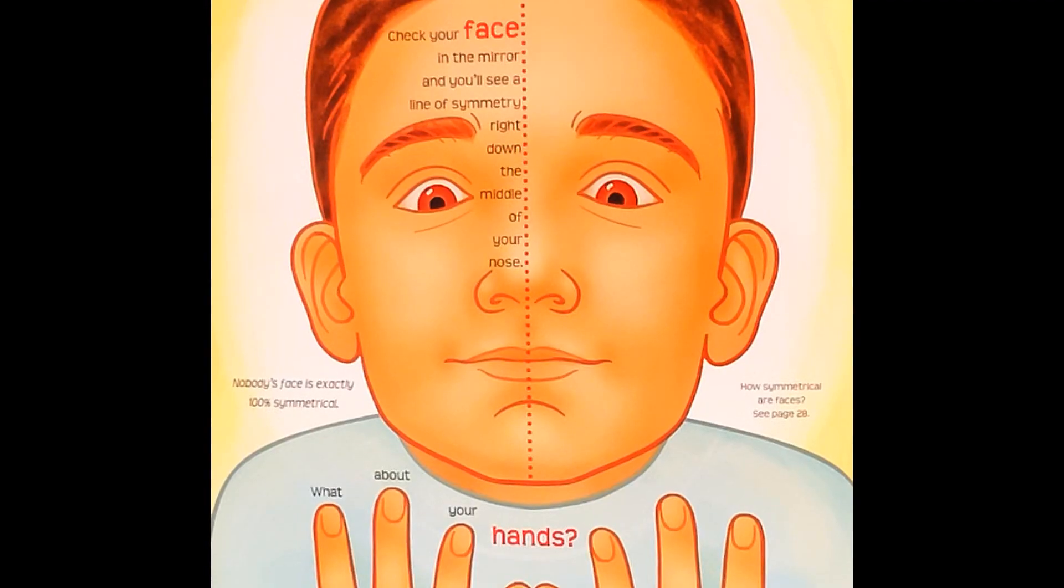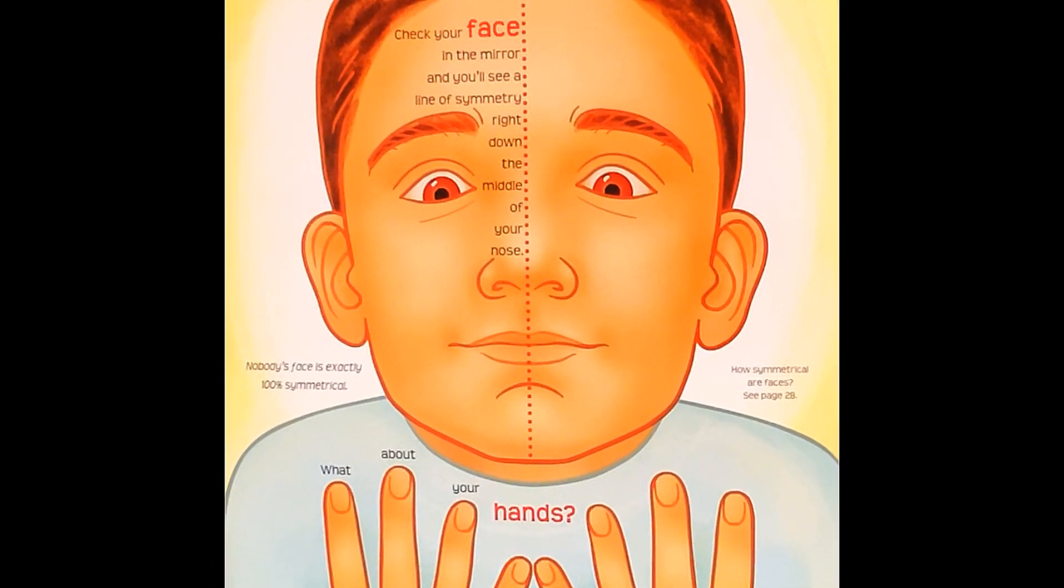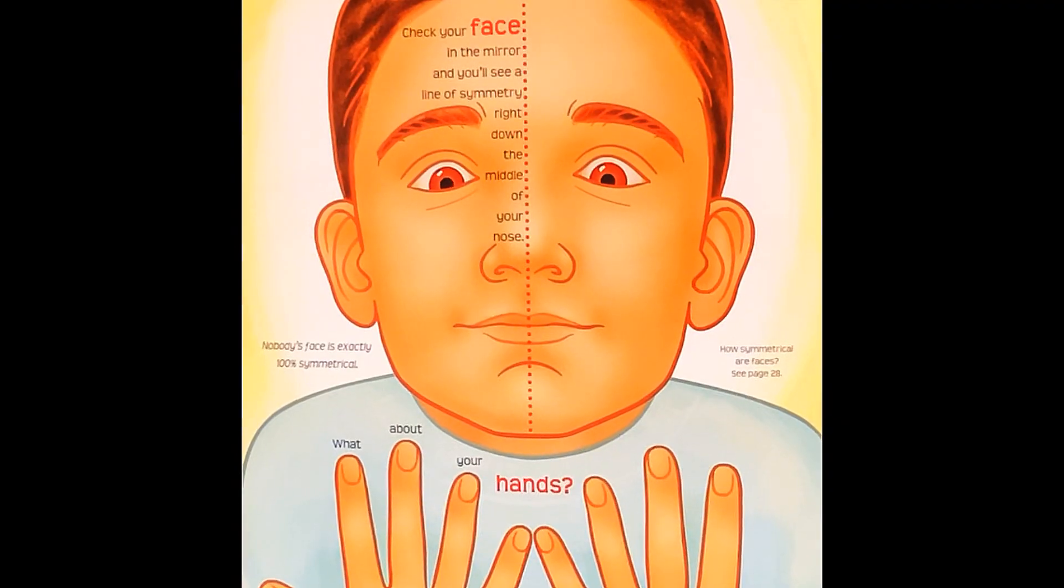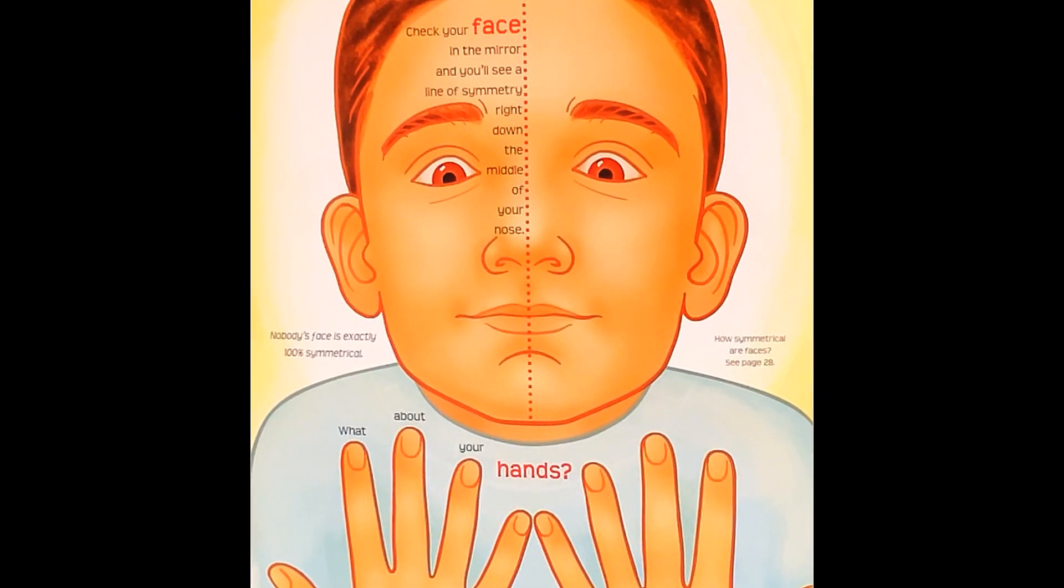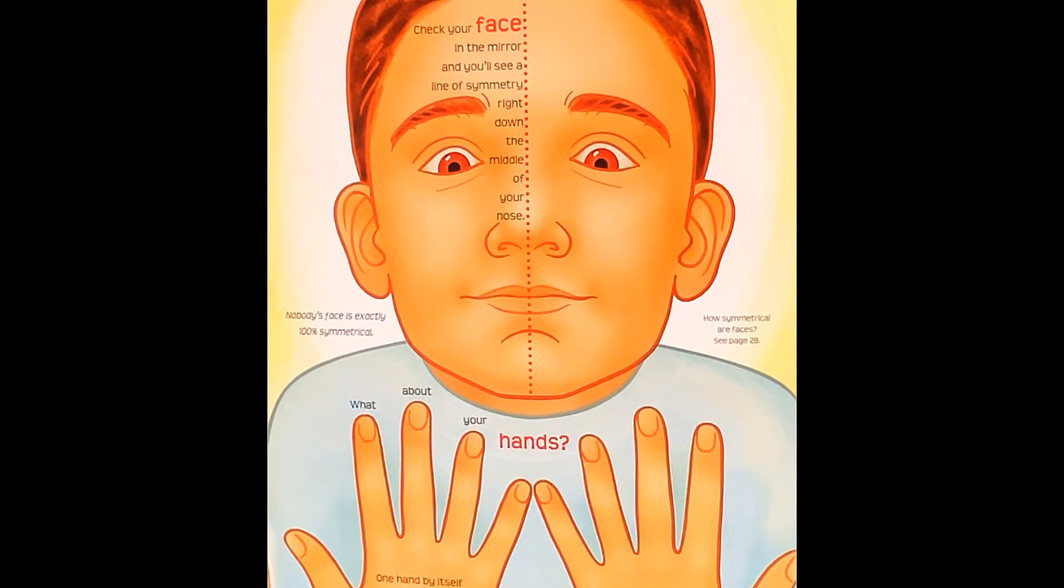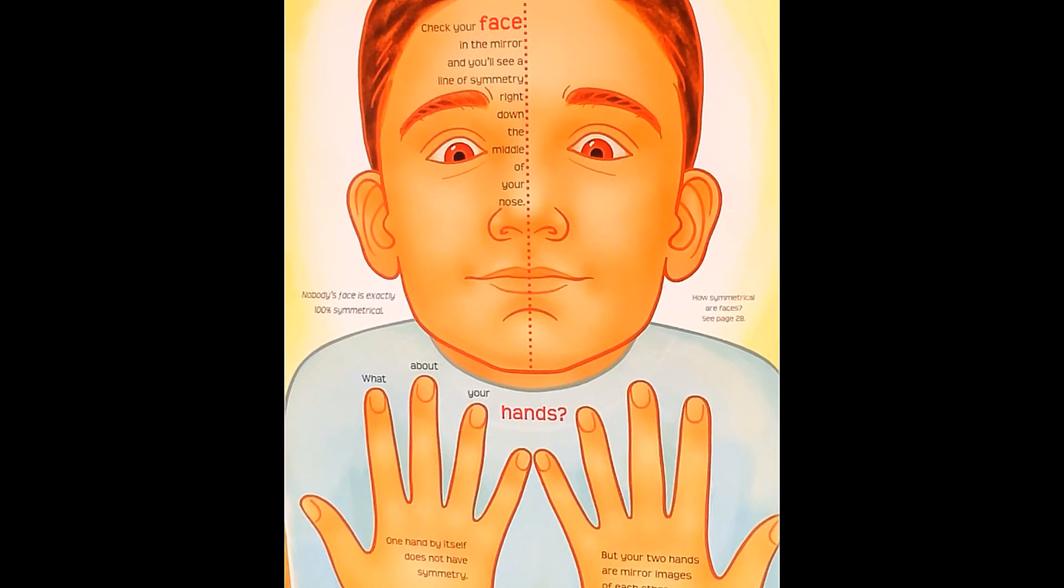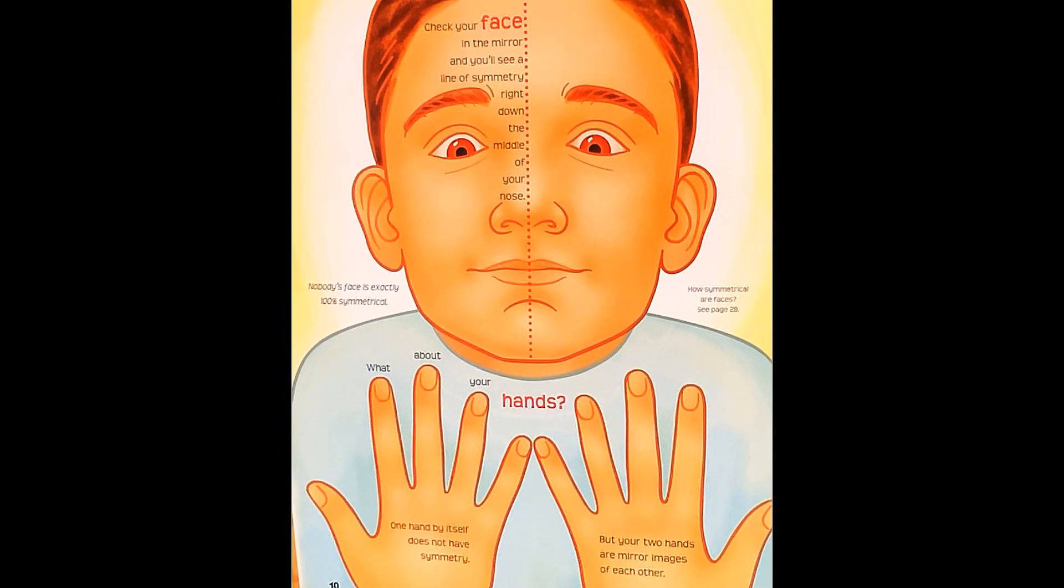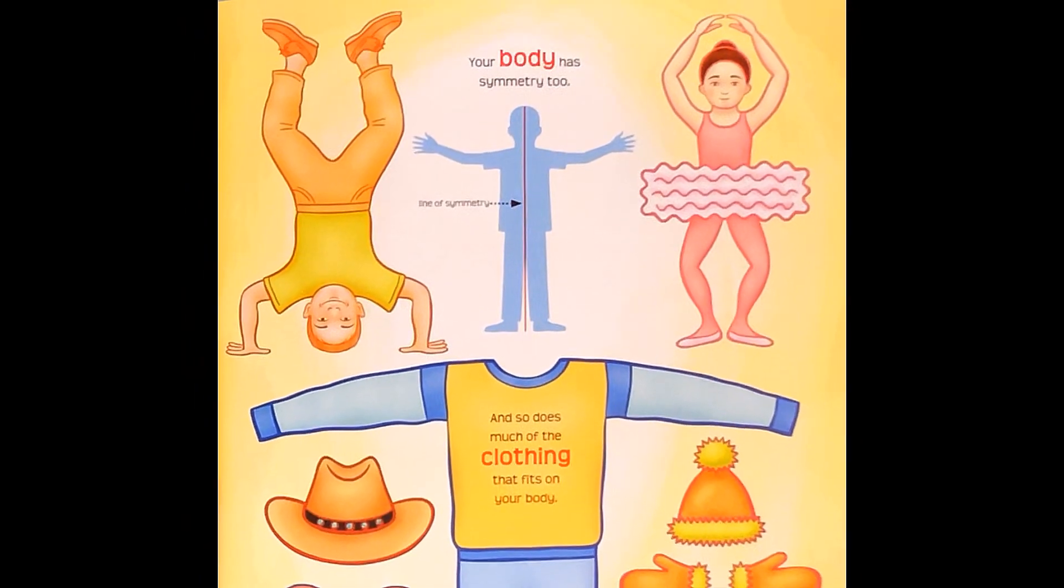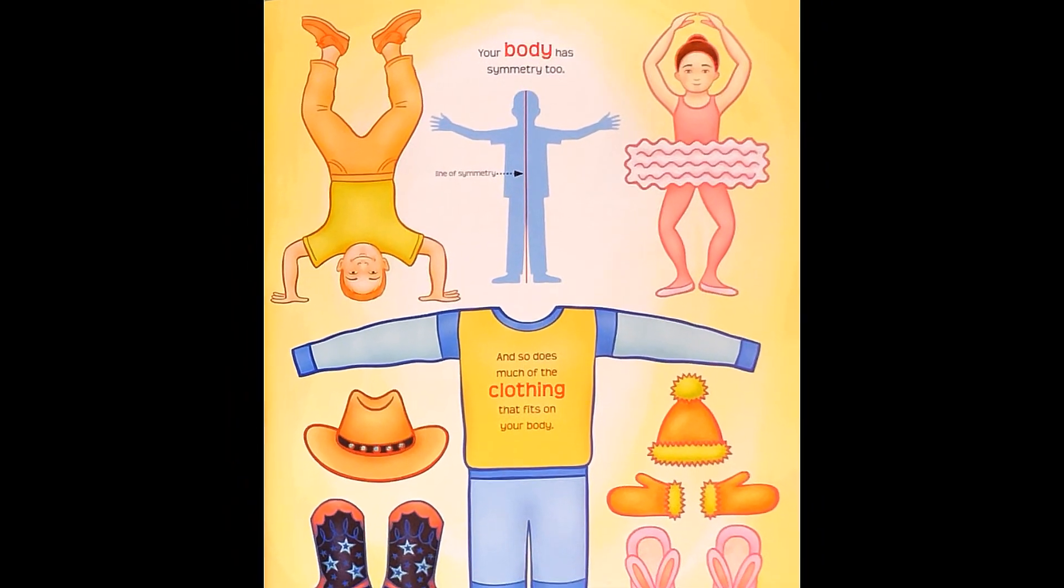Check your face in the mirror and you'll see a line of symmetry right down the middle of your nose. Nobody's face is exactly 100% symmetrical. How symmetrical are faces? See page 28. What about your hands? One hand by itself does not have symmetry, but your two hands are mirror images of each other. Your body has symmetry too, line of symmetry right down the middle. And so does much of the clothing that fits your body.